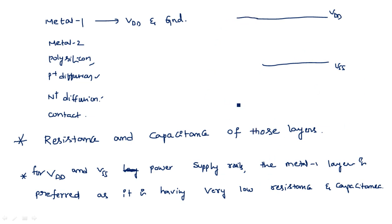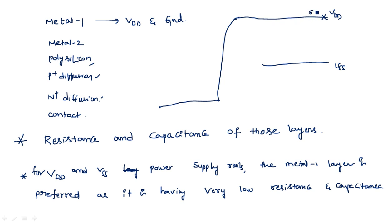Suppose I want to extend the VDD line across the entire circuit — wherever I need VDD, the same line is continued throughout. The power applied, say 5 volts at one end, should remain 5 volts at the far end without any deviation. That is why we use a low-resistance, low-capacitance path, which is metal one.